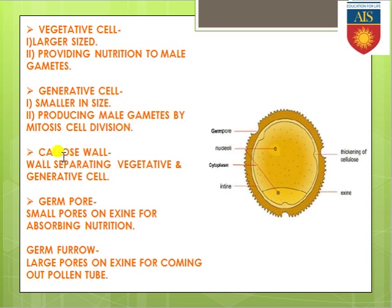The callose wall is a specific type of wall that separates the vegetative cell and generative cell from each other. Keep it in mind that this wall is made up of a complex sugar called callose, and this wall separates these two cells present in the cytoplasm.